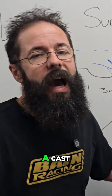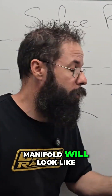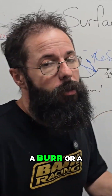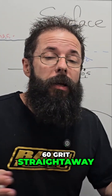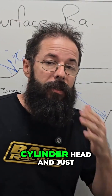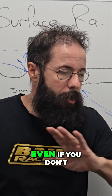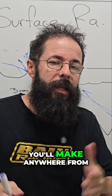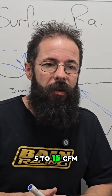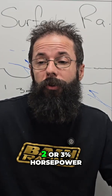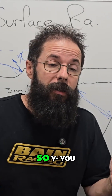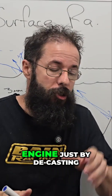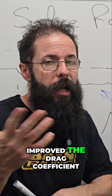This is roughly what a cast manifold will look like in terms of RA. If you just run it down with a burr or 60-grit straight away — even on a cylinder head — if you take any cylinder head and just decast it, even if you don't want to get into porting or changing the cross-sectional area, just taking the roughness out will make anywhere from 5 to 15 CFM and two to three percent horsepower. So you might end up making 10 to 15 horsepower on a 500 horsepower engine just by decasting.